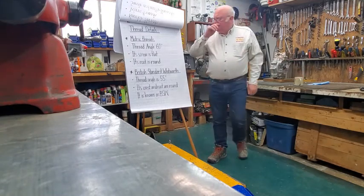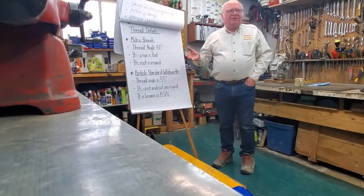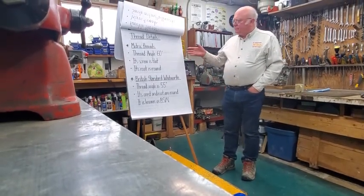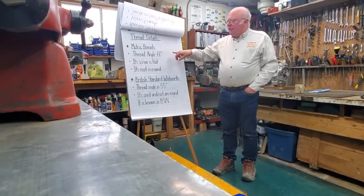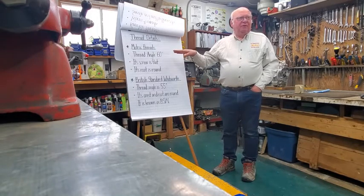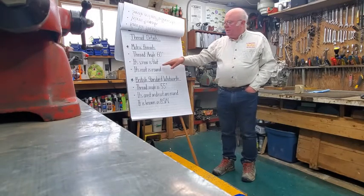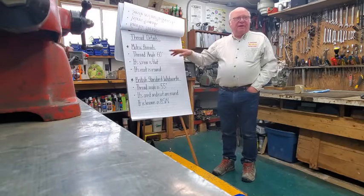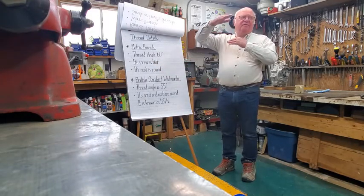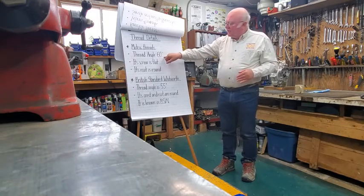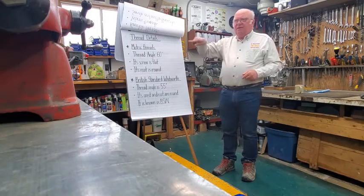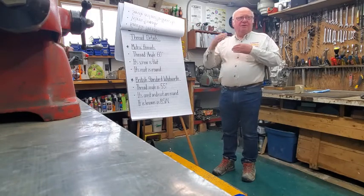Thread details: metric threads have a thread angle of 60 degrees, like UNF and UNC. The crest is flat and the root is round, so the outside edge of the screw is flat but the inside root is rounded — it has two different shapes.